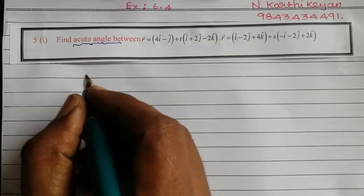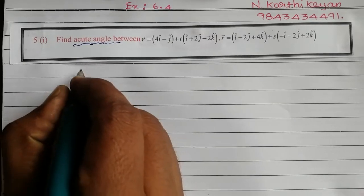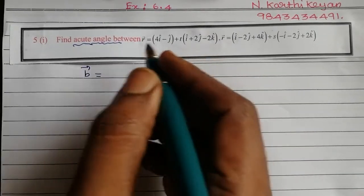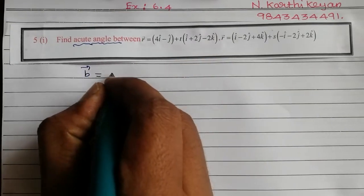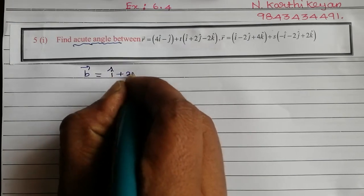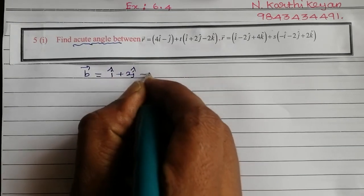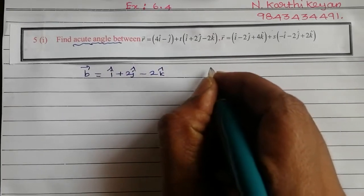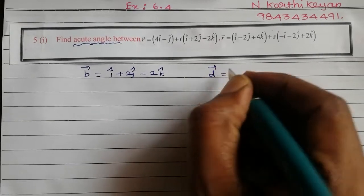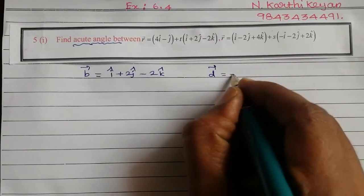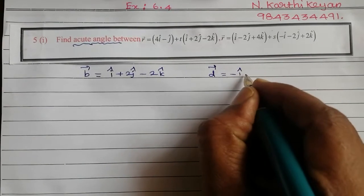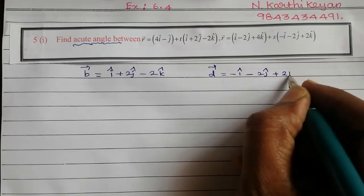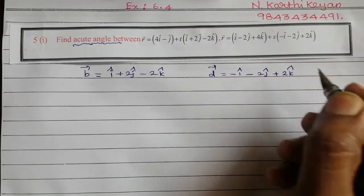First, we write b vector. From the first line, b vector is i cap plus 2j cap minus 2k cap. Then d vector from the second line is minus i cap minus 2j cap plus 2k cap.